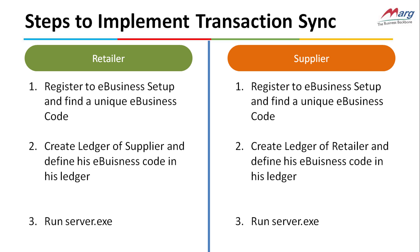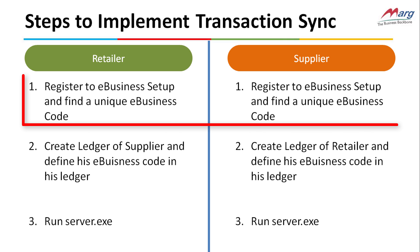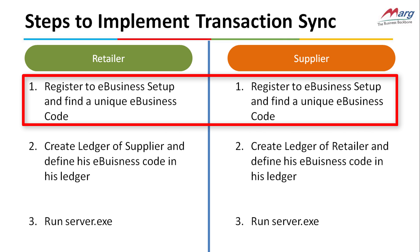These are the implementation steps for the supplier and the retailer. Firstly, both the supplier and the retailer have to register themselves in e-business setup. After you register in e-business setup, a unique code will be generated for you.